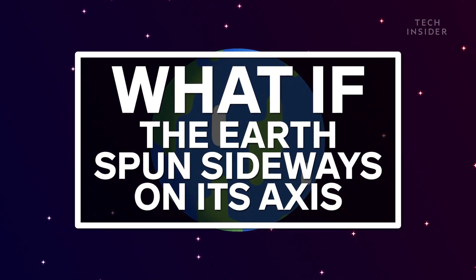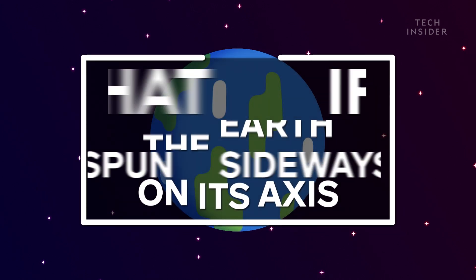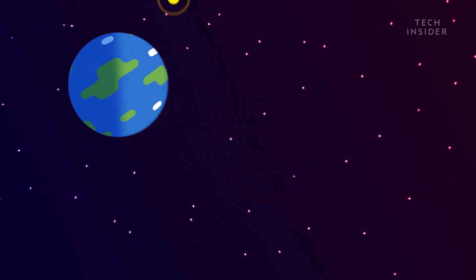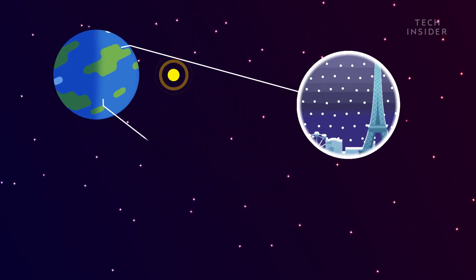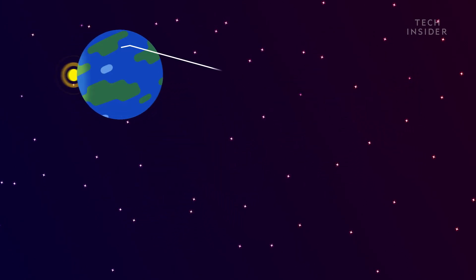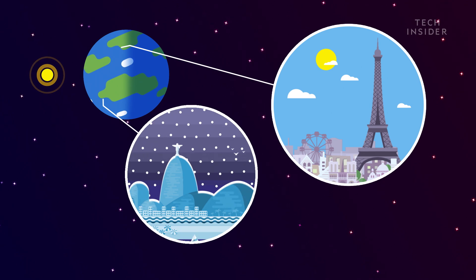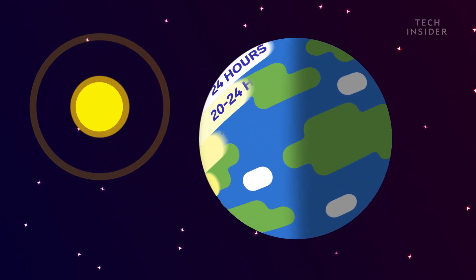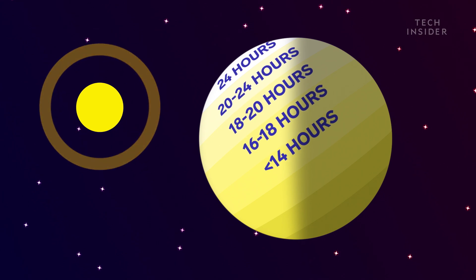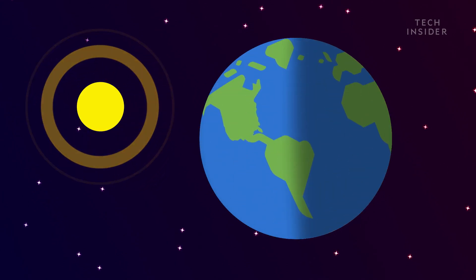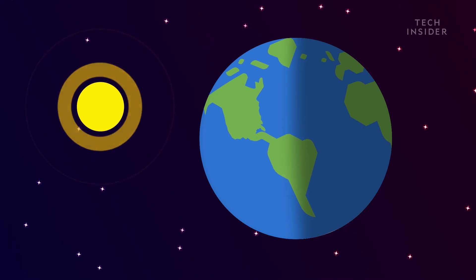Well, it wouldn't take long before utter chaos ensued. One of the most important consequences of Earth's axial tilt is the seasons. Seasons happen because the tilt points different parts of the planet toward the sun at different times of the year. But the tilt also means that different parts of the globe receive different amounts of sunlight during each season. And that's where a more extreme tilt starts to cause problems.